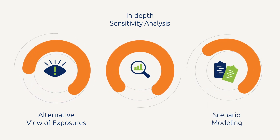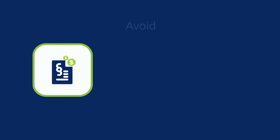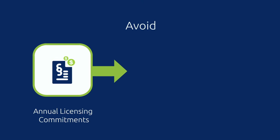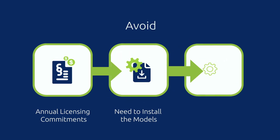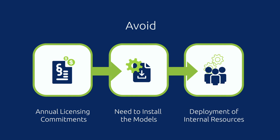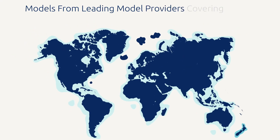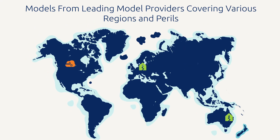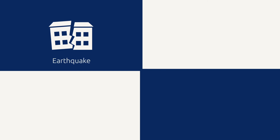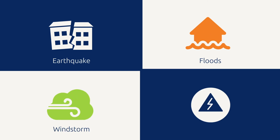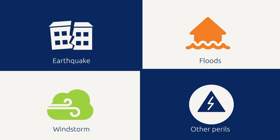Insurance organizations can request models but avoid annual licensing commitments, the need to install the models, and the deployment of internal resources. Exceedance can implement a range of models from leading companies providing catastrophe risk models for various parts of the world. Model availability includes earthquake, flood, windstorm, and other perils.